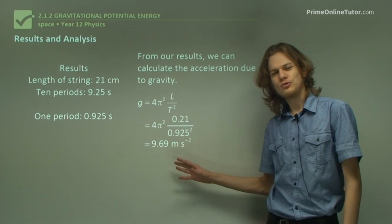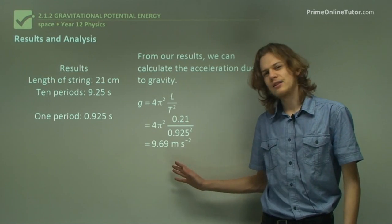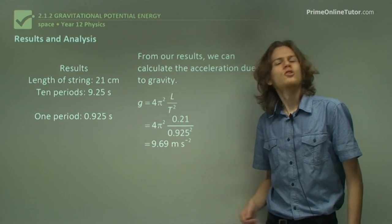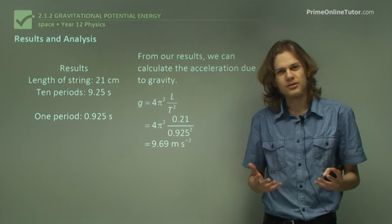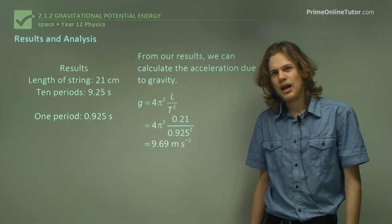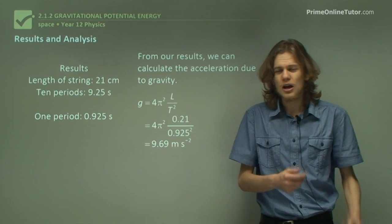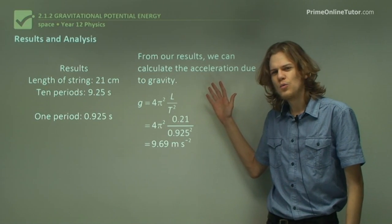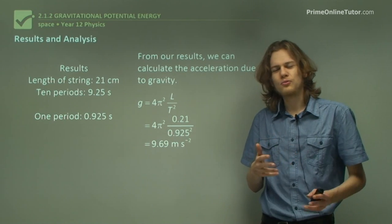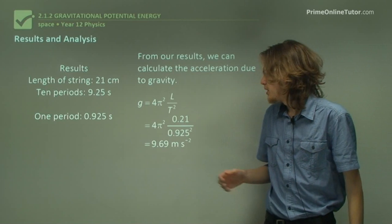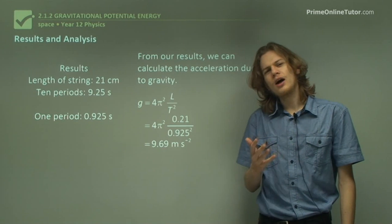This is pretty close to what we expected — 9.81 metres per second squared — but it's not exactly the same. An important part of experimental physics is trying to figure out what sorts of errors could mess up your results. It's easy to say you measured the length of the string wrong or timed it wrong, but because we took an average, we actually timed it fairly accurately. And while the length of the string may have been a few millimetres off, it won't really make too much of a difference to our answer.